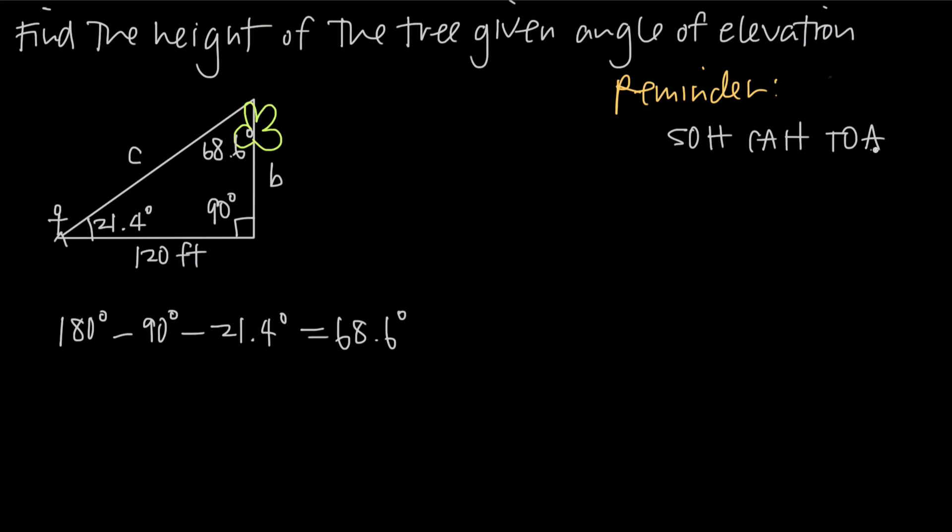If we remember the SOH CAH TOA rule that tells us that sine is equal to opposite over hypotenuse, cosine is equal to adjacent over hypotenuse, and tangent is equal to opposite over adjacent, then we can say that cosine of our angle of elevation, 21.4 degrees, is going to be equal to adjacent over hypotenuse. So the adjacent side is 120 feet, and we're dividing that by the hypotenuse, which we're calling C.